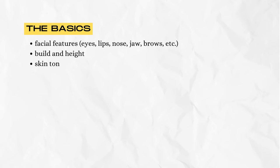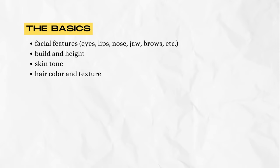It helps to have a more vivid image in our minds of who this person we just met actually is. Some basics you might want to describe about a character's physical appearance are facial features — eyes, lips, nose, jaw, brows, et cetera — build and height, skin tone, and hair color and texture. Those are the absolute basics. Knowing two or three out of those four things allows us to conjure a pretty accurate mental image.